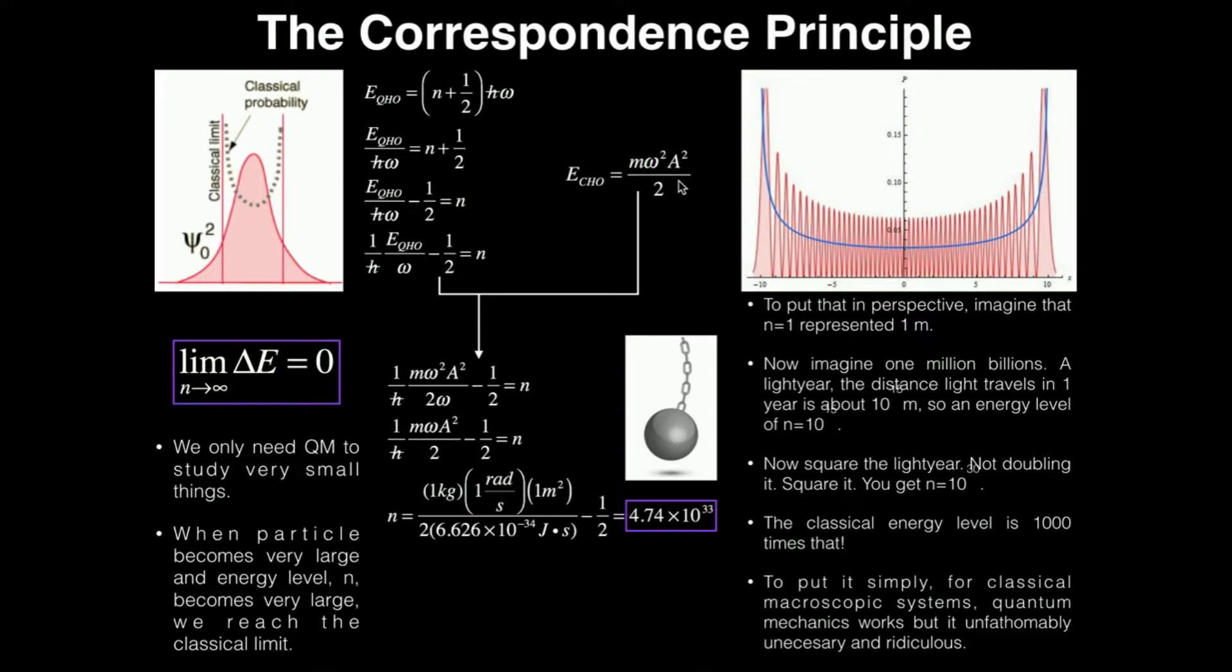One basic way to state the correspondence principle is if you have a classical particle such as the wrecking ball and you give it quantum treatment, take this energy expression for the classical species and plug it in for the quantum e. I get one over h-bar times m omega squared a squared over two omega, then minus a half equals n. I've got omega squared over omega, so I can cancel the omega. Now I have one over h-bar times m omega a squared over two, minus a half, equals my energy level.